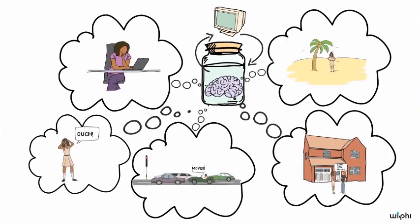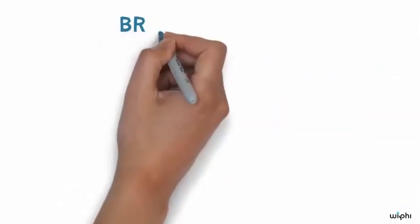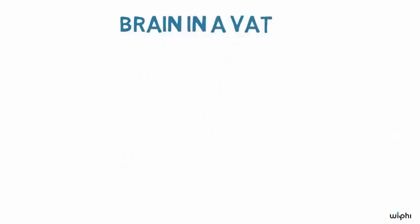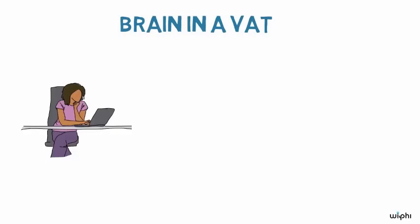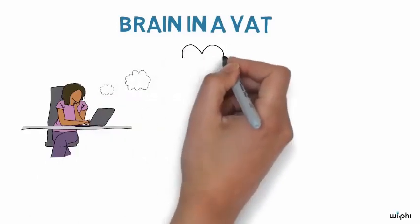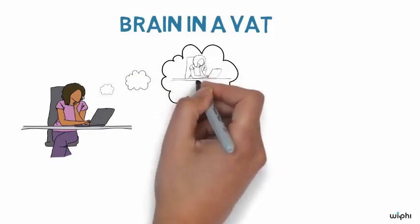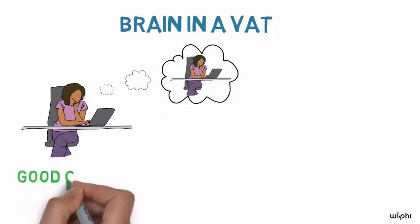Typical skeptics don't try to prove that you actually are a brain in a vat. They will argue instead that it's bad enough that you just might be and you can't tell the difference. Even if you are in an ordinary physical world watching a video and actually looking at your hand in front of you, we call that the good case.